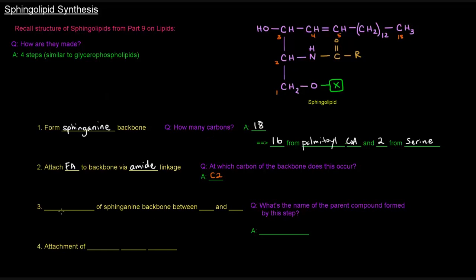The next thing that we need to do is have the desaturation of the sphingosine backbone between carbons four and five. We can see that right here between carbon four and carbon five, there is a double bond, so that has to be put in the third step. And the question there is, what's the name of the parent compound formed by this step? We will make the parent compound of sphingolipids, which is called ceramide.